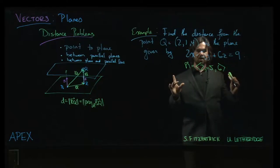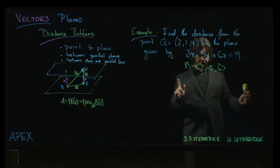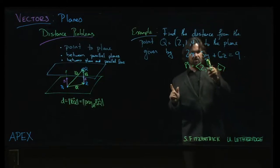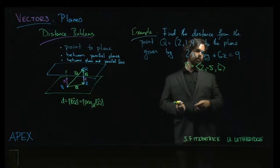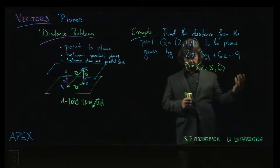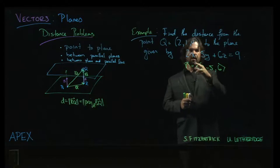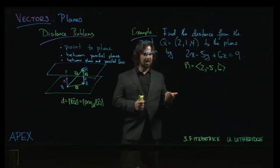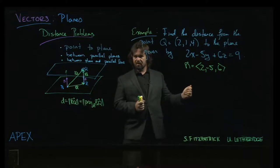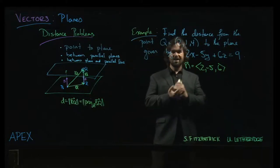The simplest way to get a point is to set two of the three coordinates equal to zero and solve for the remaining one. For example, I could put x and y equal to zero, and then z would be 9/6 which is 3/2. I could put y and z equal to zero and then x is 9/2.